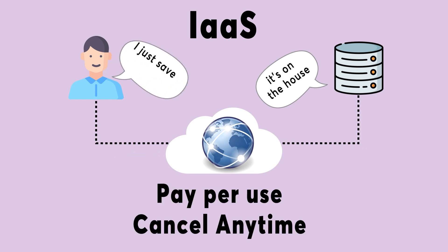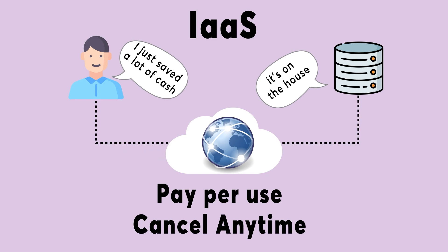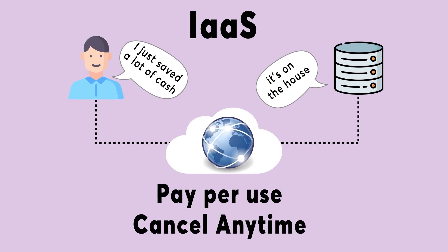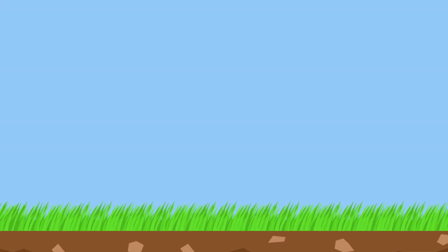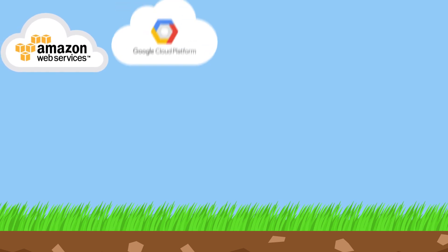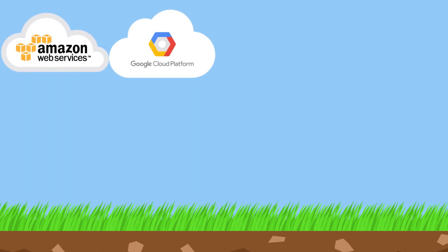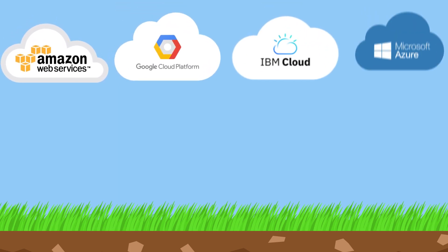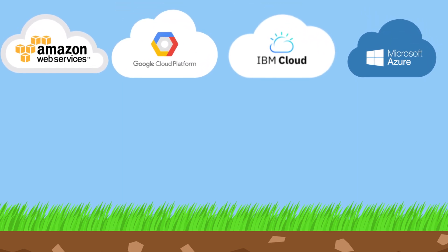That means you don't need to invest in physical infrastructure, which can be extremely expensive in terms of setup and ongoing maintenance. Examples of IaaS provider companies include Amazon Web Services, Google Cloud Platform, IBM Cloud, and Microsoft Azure.